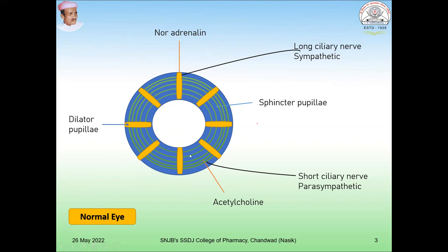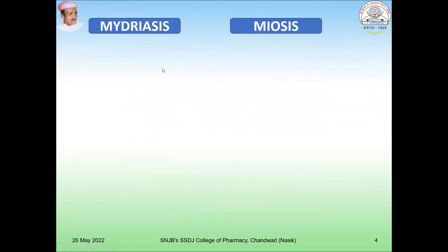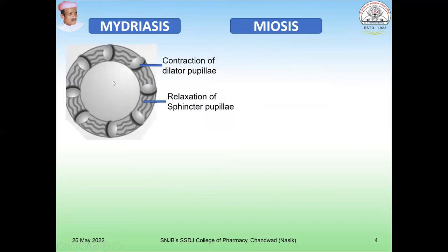During contraction and relaxation of the pupil, the sphincter pupillae as well as the dilator pupillae play a very important role. In the case of mydriasis, there is a contraction of the dilator pupillae and relaxation of the sphincter pupillae, resulting in an increased pupil size compared to the normal size.